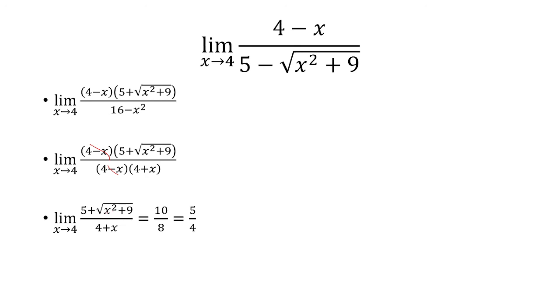So 4 squared plus 9 is 25. The square root of that is 5. 5 plus 5 is 10. In the denominator, we have 4 plus 4 is 8. 10 over 8 simplifies to 5 over 4. And that is our limit.